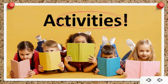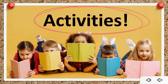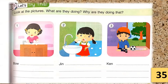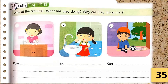Now let's move on to our activities. Get ready with your book and pencil. We will start our activity from page 35. The direction says: look at the pictures — what are they doing and why are they doing that? We have three pictures; determine what they are doing and the reason why.